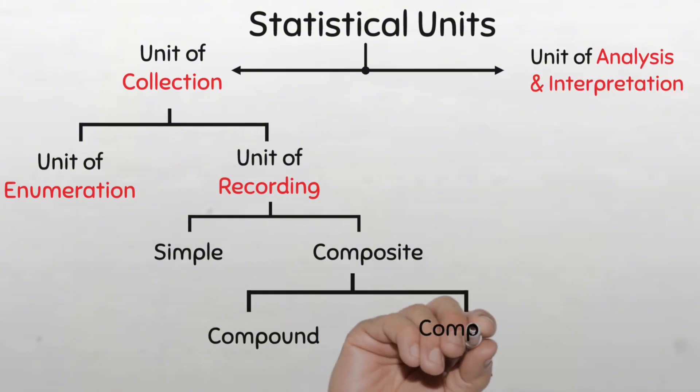And then we have the complex units. These are much more than compound units. They are derived from more intricate or multi-faceted processes, often involving multiple dimensions or criteria. For example, an index like the consumer price index, CPI, that combines various prices of goods and services into a single measure, is a complex unit.